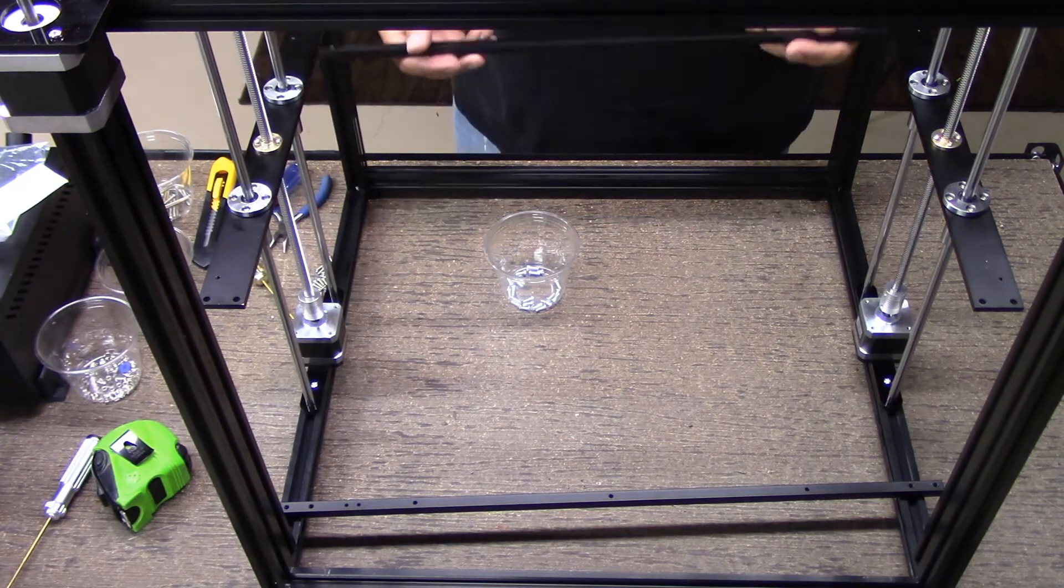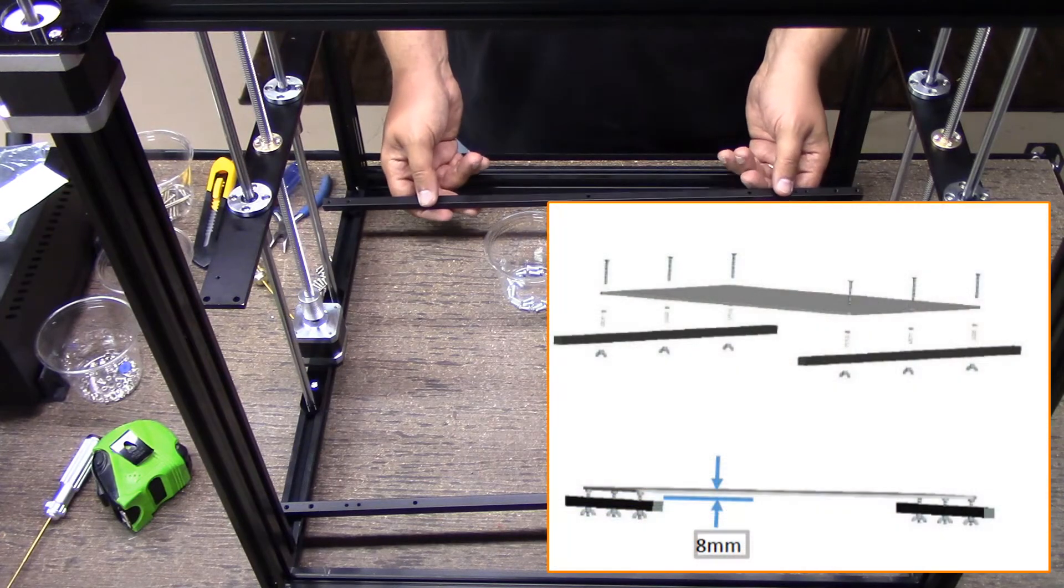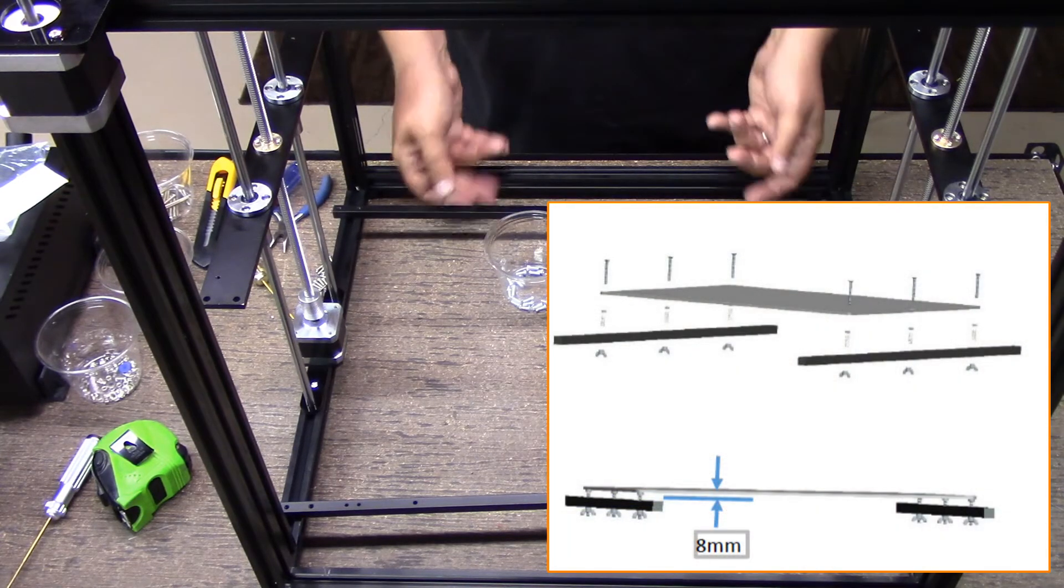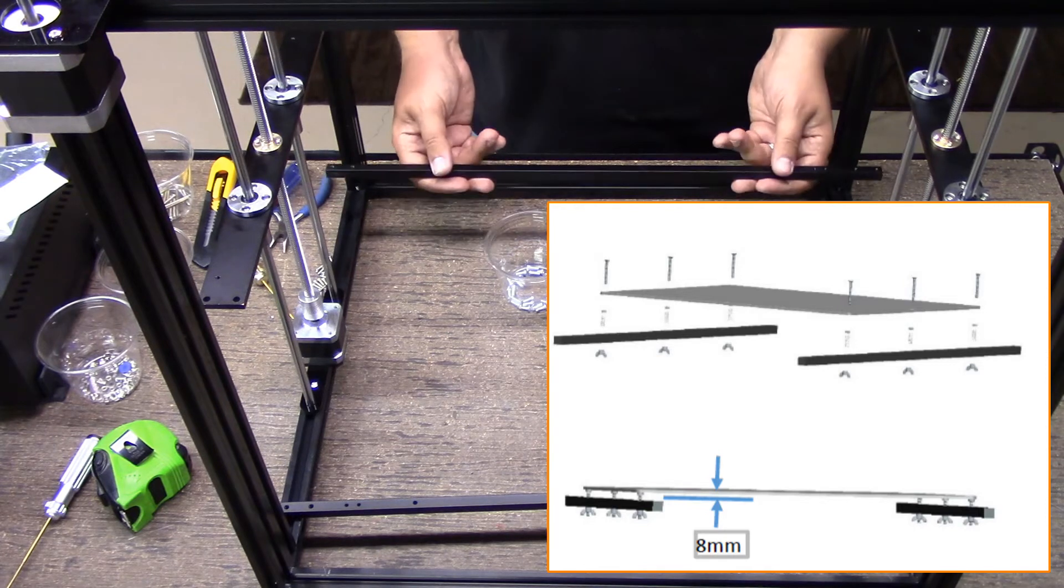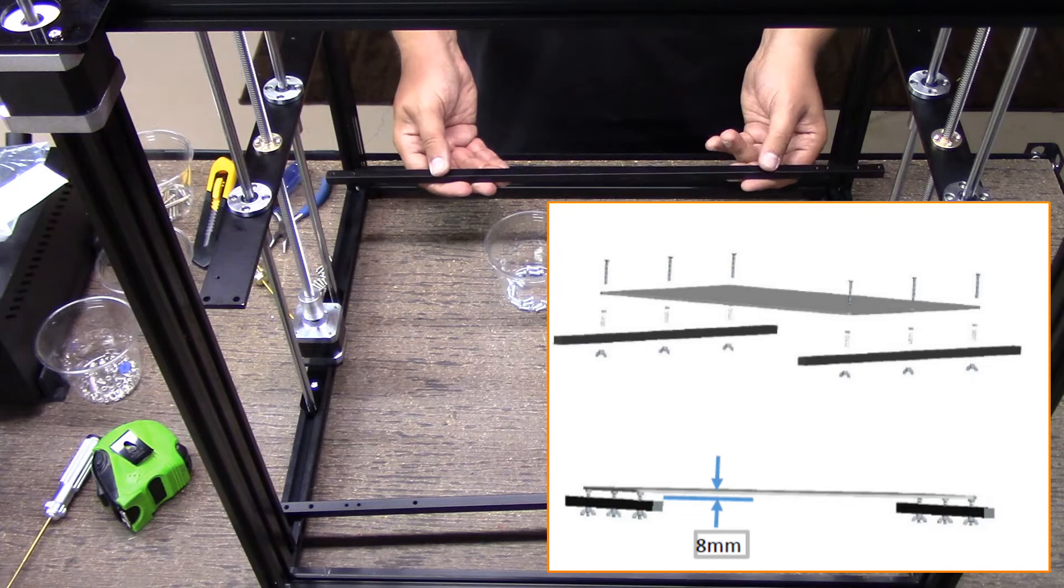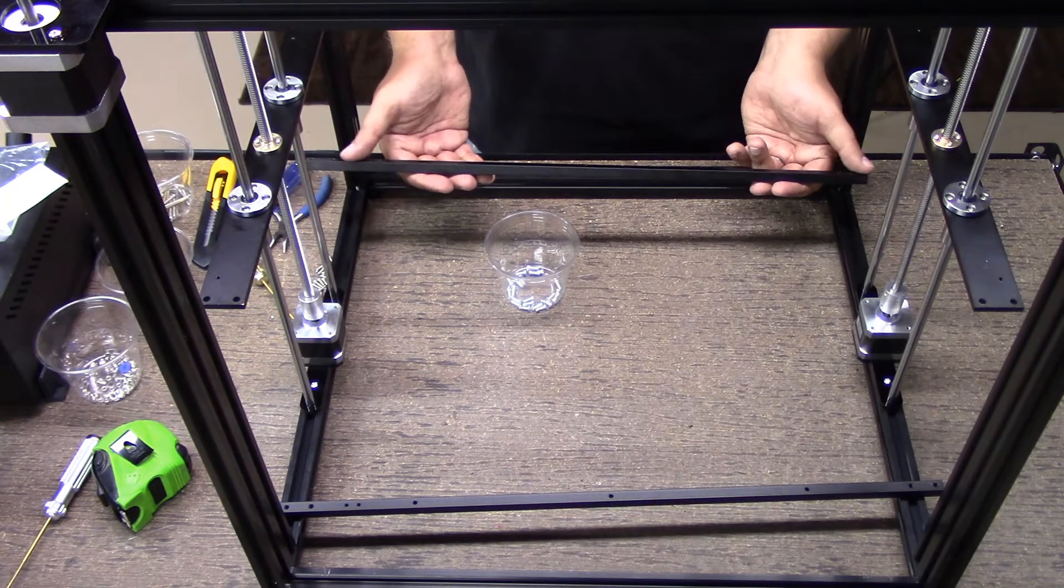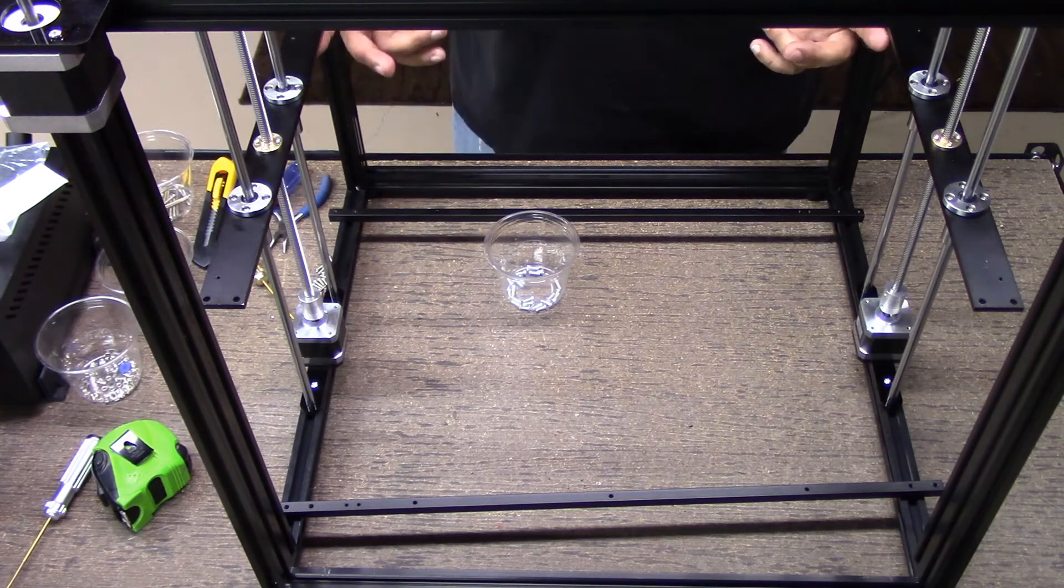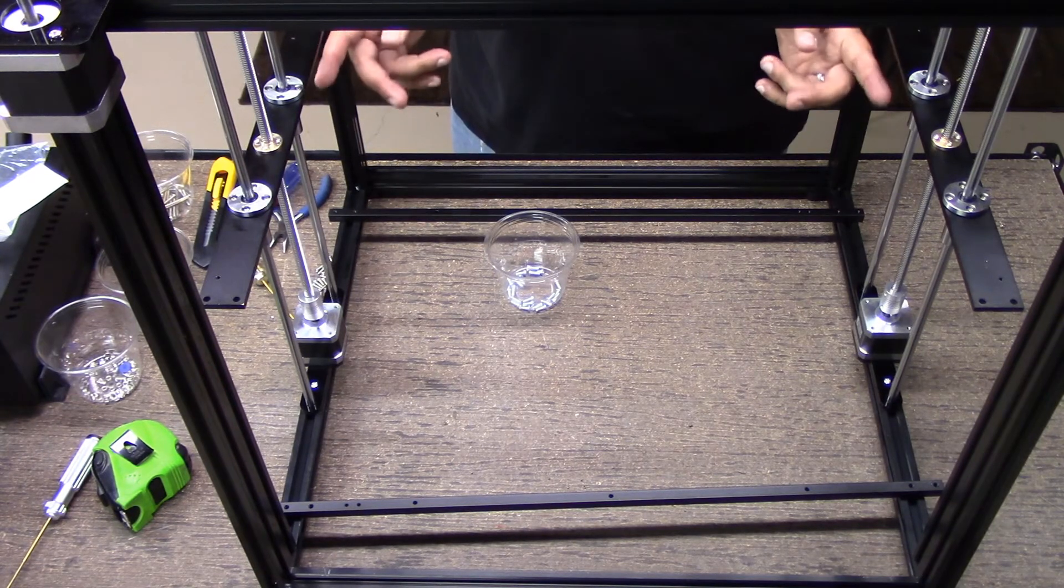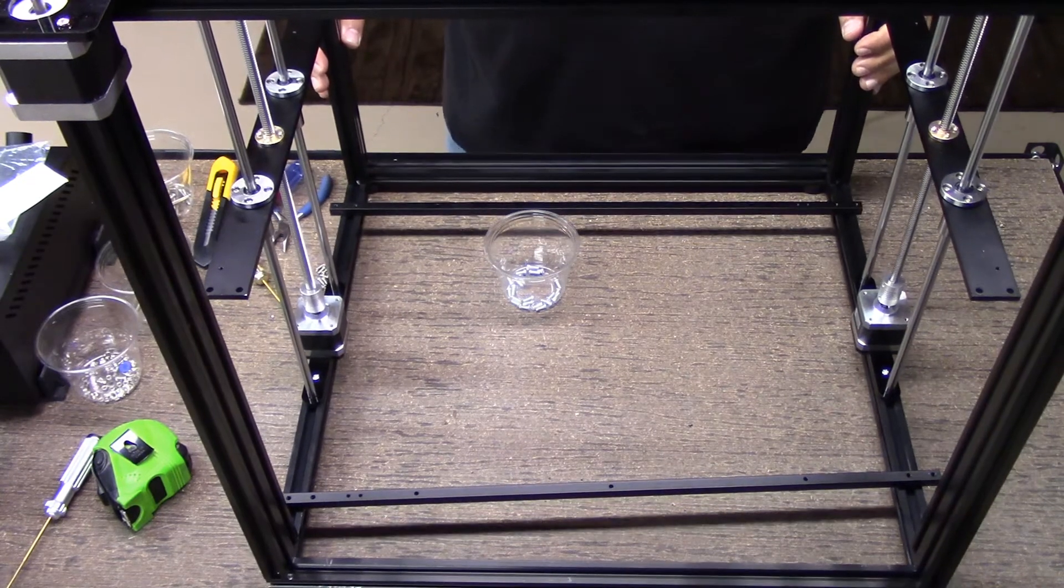So now what I need to do is install these rods down here. The bed sits on it. Actually the bed is so big it has three leveling screws in here and then it has two number five switches. The Z axis switch is over here. So I'm going to assemble this and we'll come back and take a look once I put the bed on.